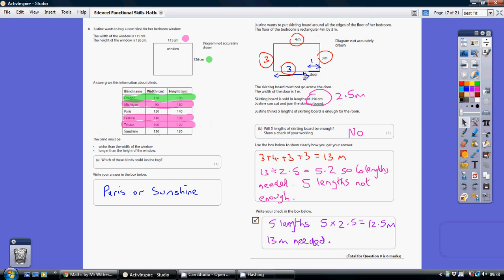Step one, I've worked out the total amount of skirting board I need is 13 meters. Each skirting board is sold in lengths of 250 centimeters. 250 centimeters is 2.5 meters because there are 100 centimeters in a meter.